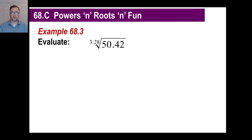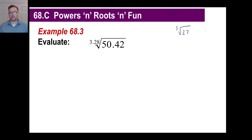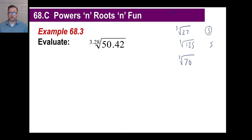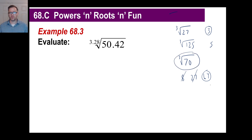Let's look at estimating powers and roots. One helpful thing is to estimate first. For the cube root of 27, you know 3 times 3 times 3 equals 27, so the answer is 3. For the cube root of 125, five times five times five is 125, so the answer is 5. For the cube root of 70, you'd check: 3³ = 27, 4³ = 64 — that's close — so the answer is a little more than 4.